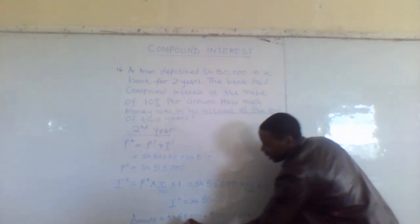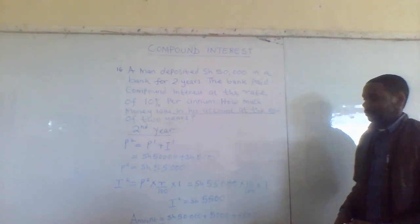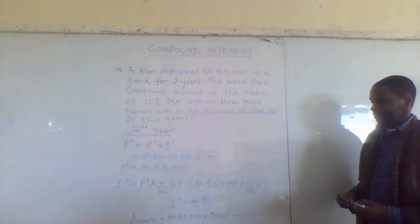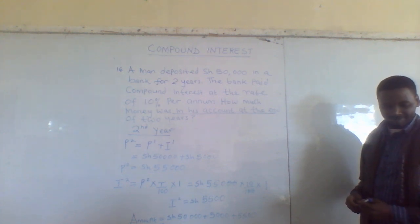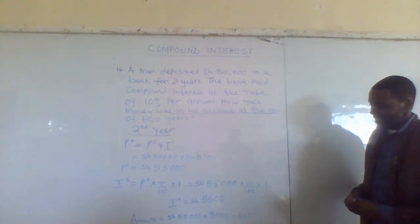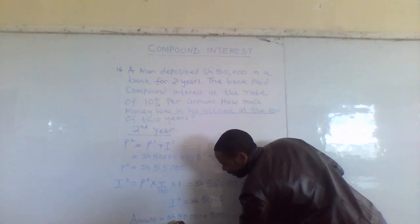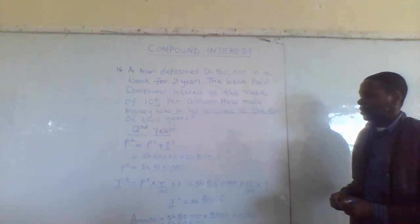Put that together: 50,000 plus 5,000 plus 5,500, and you get 60,500. The total money in the account at the end of two years is 60,500.